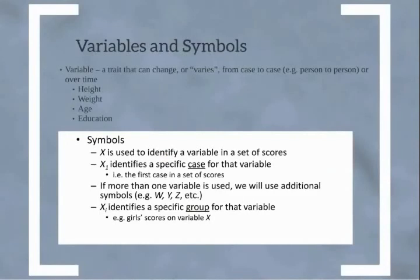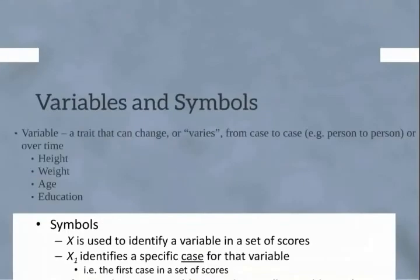So let's take a second to talk about variables and symbols. A variable is a trait that can change from person to person or over time. It's called a variable because it varies across people or it varies over time. And some very basic demographic variables are things like height, weight, age, education, so on and so forth, ethnicity, for example.